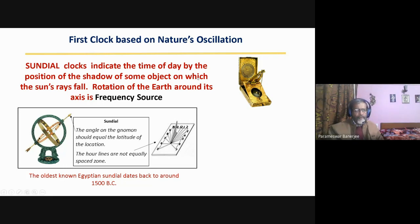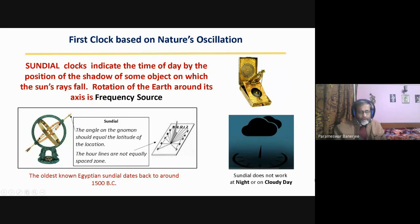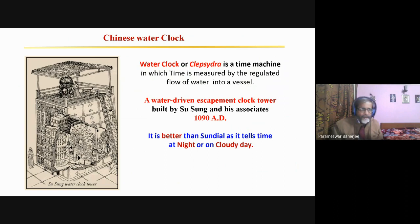But the first clock by the human being is a sundial. Sundial means, sundial indicates the time of the day, by the position of the shadow that falls by the sunray. When sunray falls on a particular object, it makes a shadow. So, position of the shadow indicates the time of the day. So, rotation of the earth around its axis is the frequency of the source. So, now, it is still there as a souvenir in many places, but previously, it was the only way you can get the time. So, but the sundial has an important disadvantage. When you are in a cloudy day, you cannot get the sundial to work, and also in the night.